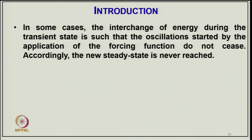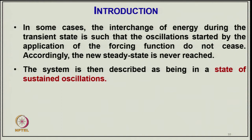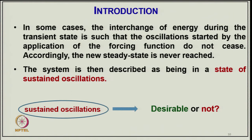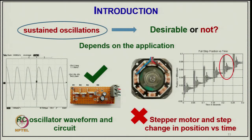In some cases, the interchange of energy during the transient state is such that oscillations started by the application of a forcing function do not cease, and accordingly the new steady state is never reached. The system is then described as being in a state of sustained oscillations, which some practical applications require. For example, the RC oscillator waveform shown here is used in applications where continuous sustained oscillations are required, such as for waveform generation.